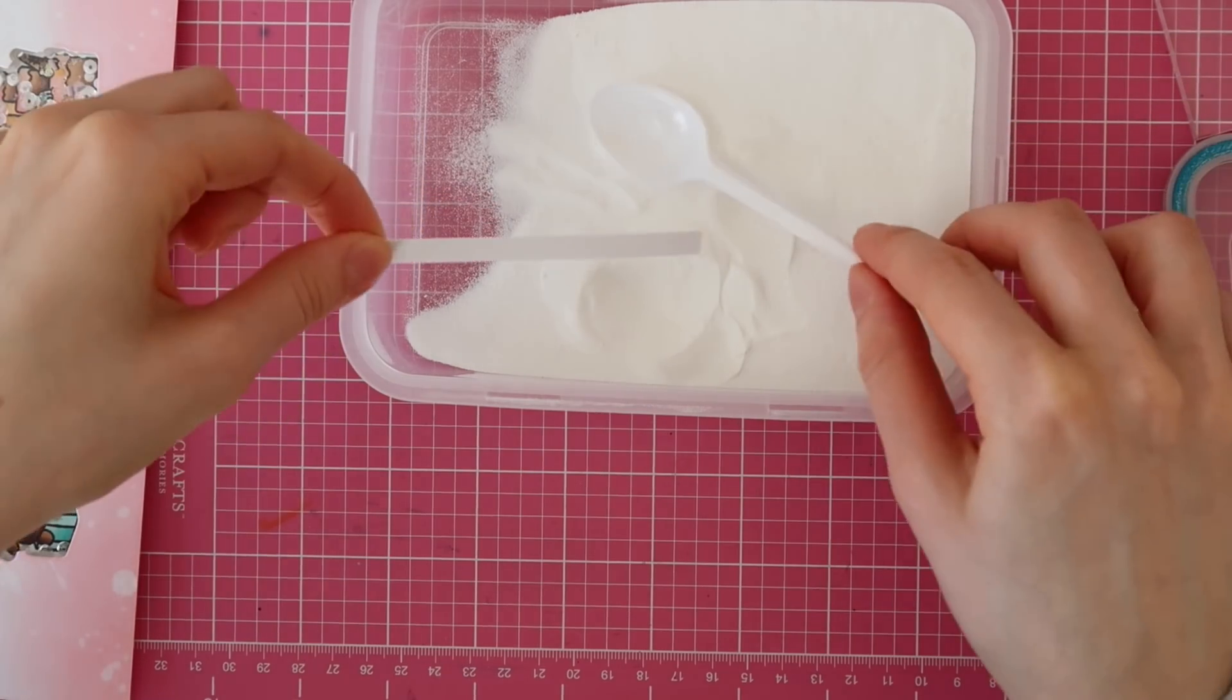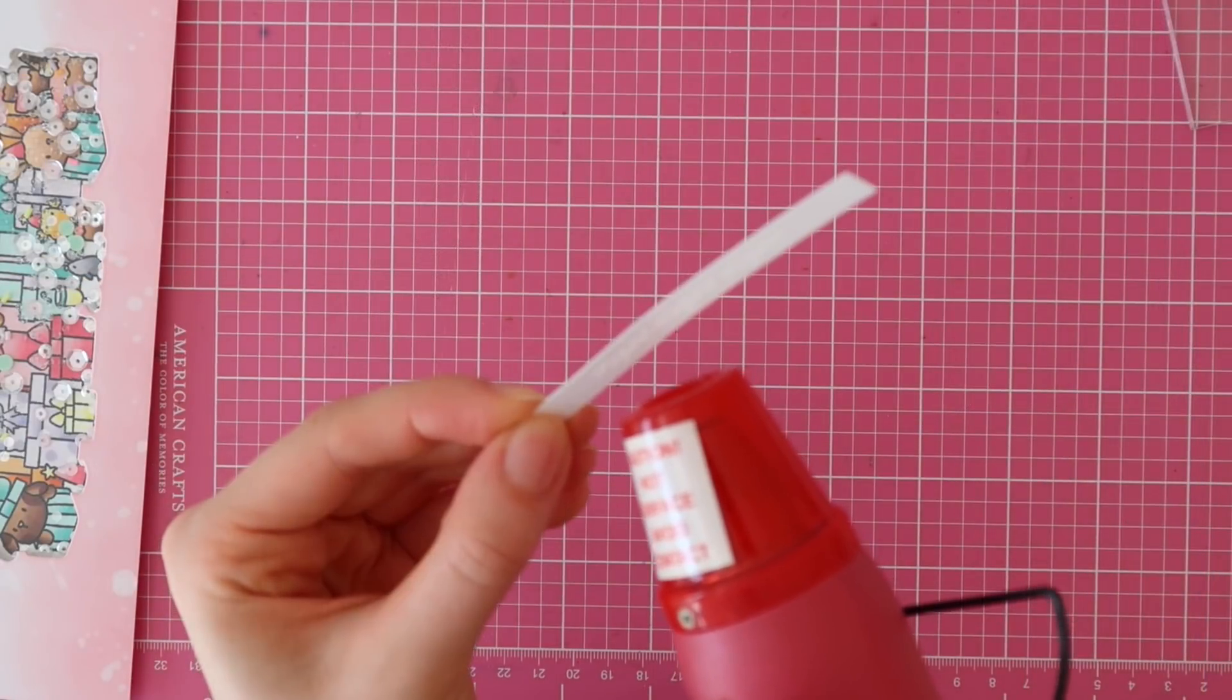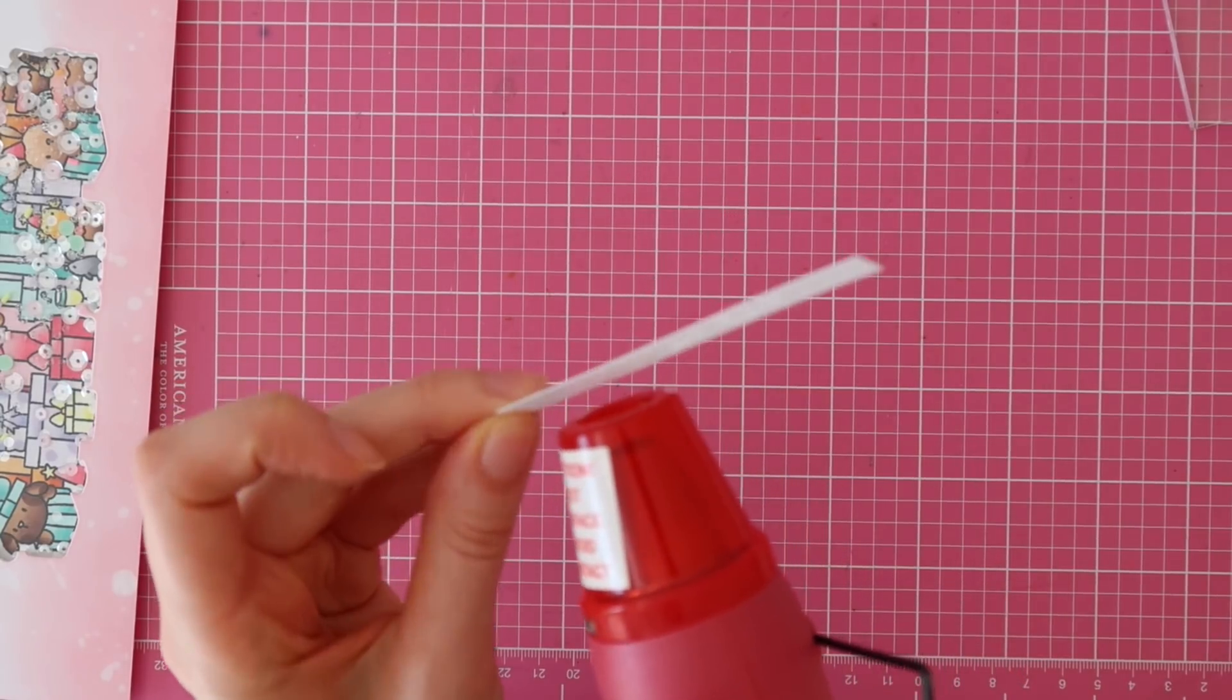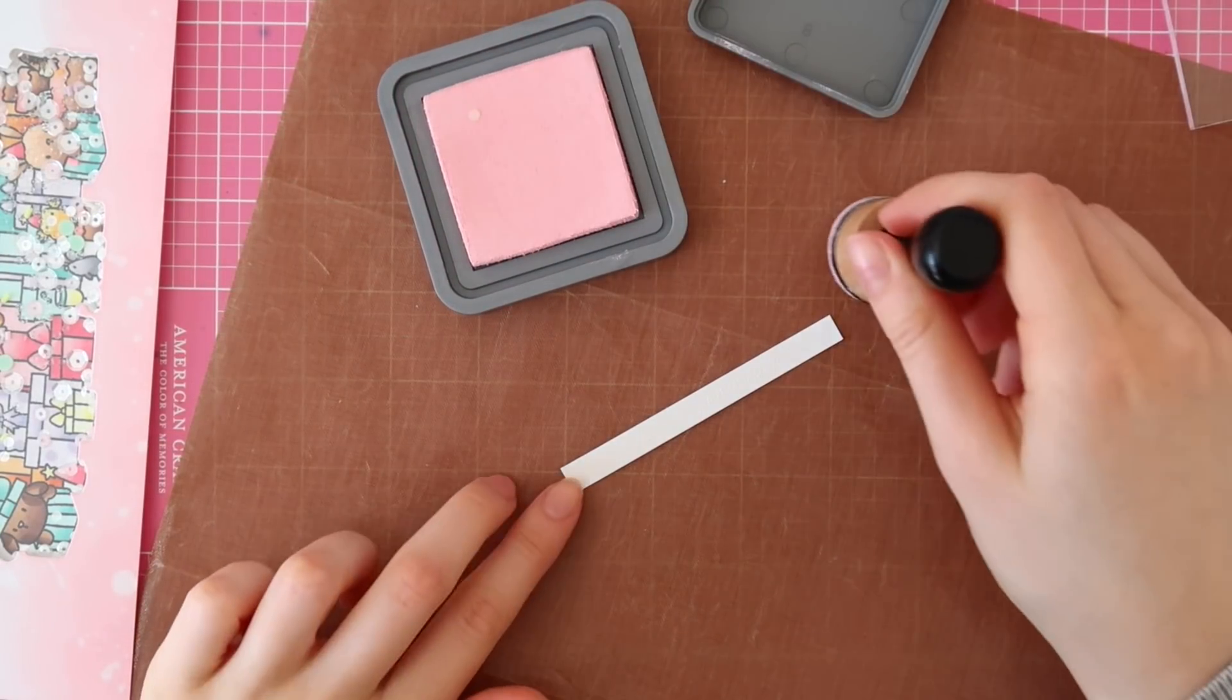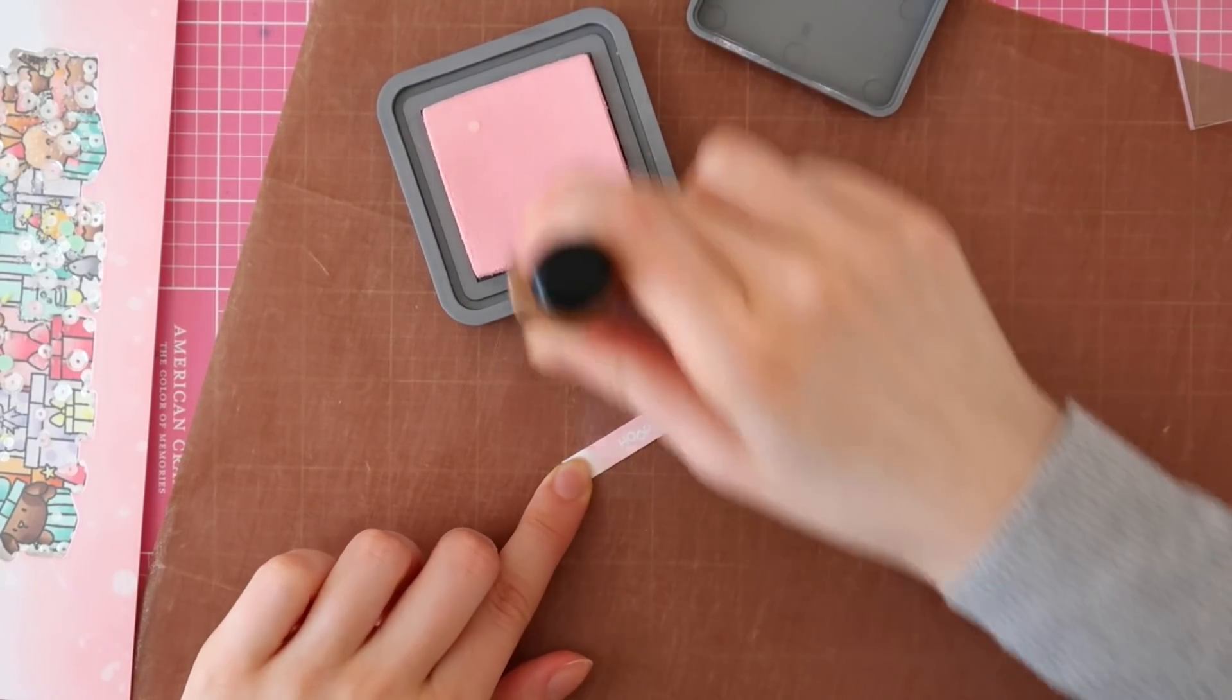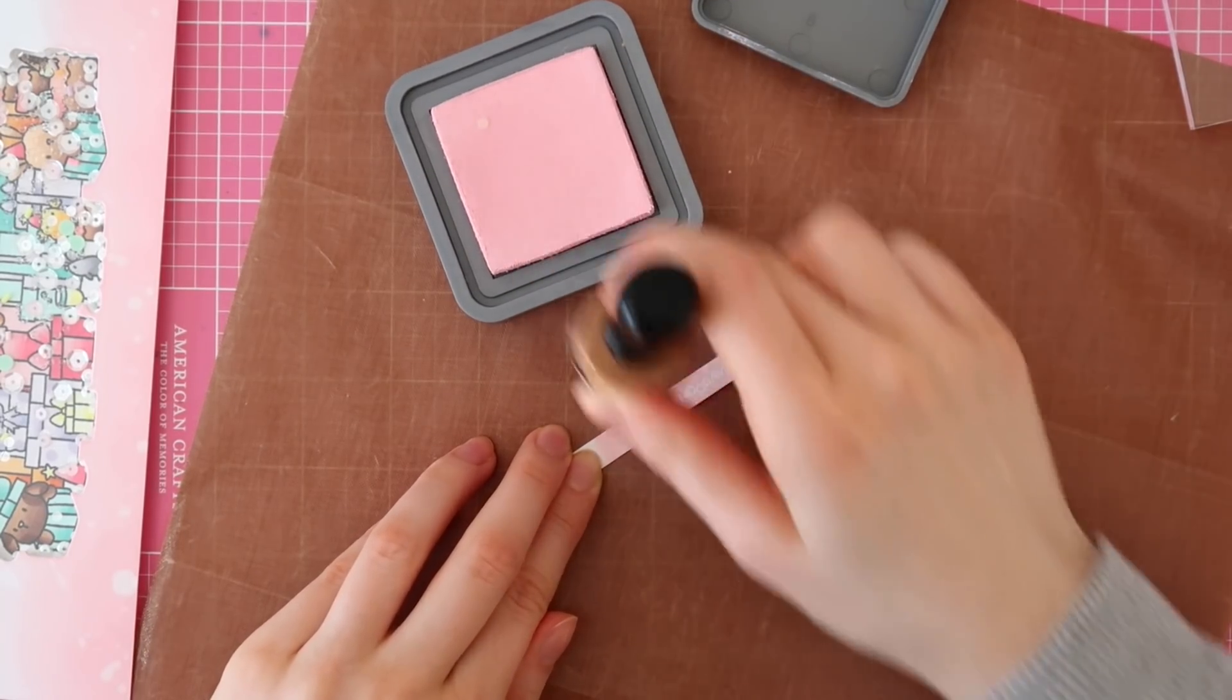Okay, so for my sentiment, I'm actually going to heat emboss that hooray greeting three times on a tiny little strip of white cardstock using opaque bright white embossing powder from WOW. By the way, this was my second attempt because at first I just stamped the hooray greeting with black ink on white cardstock.